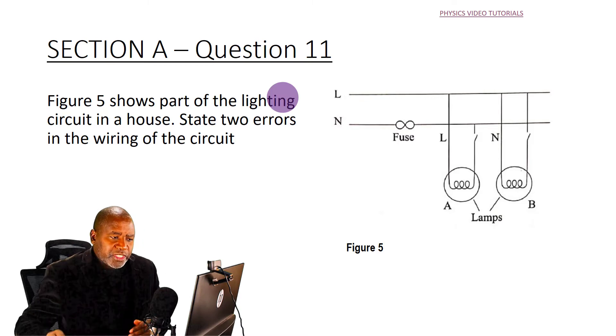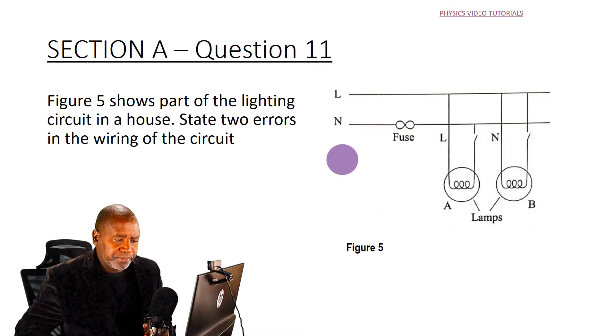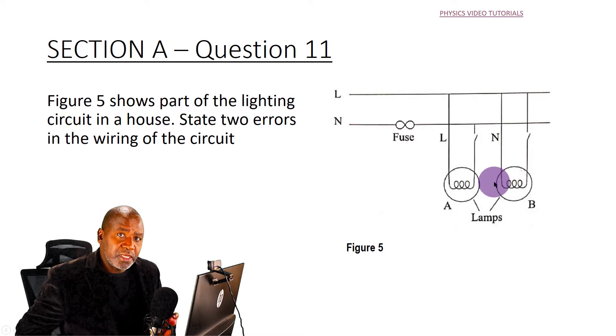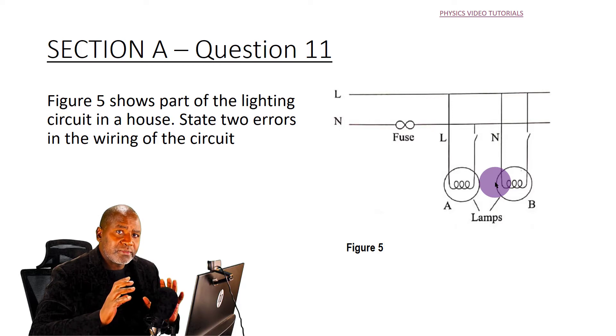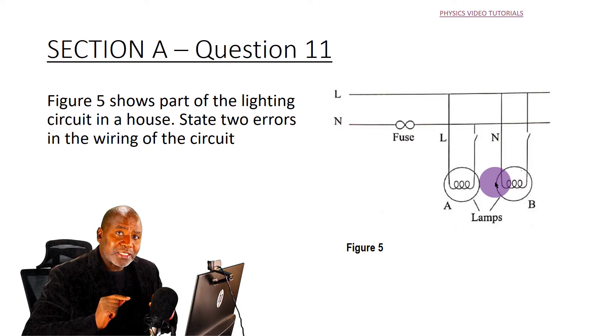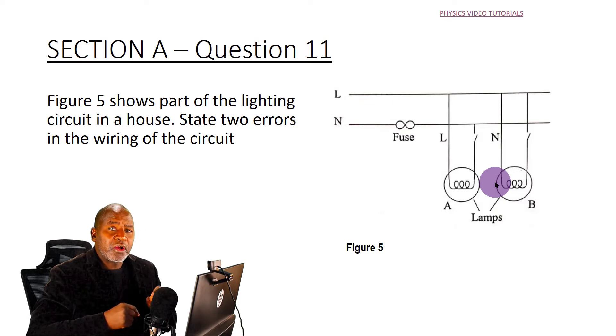First of all, when we study this, we must bear in mind that the lamps in domestic wiring must be connected in parallel to each other, so that each one of them works normally. That is how we connect lamps in the house.